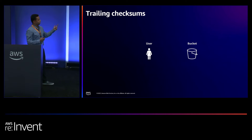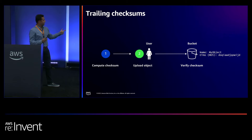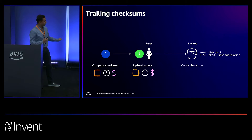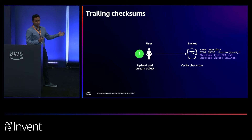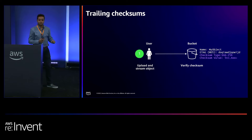Traditionally, uploading an object to S3 with integrity checking is a two-step process: first compute the checksum, then upload the object. Both operations have their own wall-clock time and processing power, meaning more cost and time. With trailing checksums, we calculate the checksum as you're streaming bytes to S3 and append it as a trailer, effectively reducing two operations into one — saving you both cost and processing time.